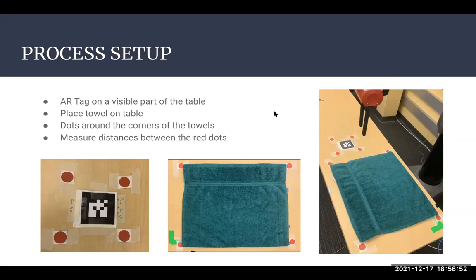So for our project we set up as follows. Initially we set an AR tag on the visible part of the table in view of our camera. Then we placed a towel on the table, and then we put dots on the corner of the towels and along the outside of the AR tag. From there we were able to measure the distances between the red dots in order to map the coordinates of the towel, so that the Baxter robot could register it.